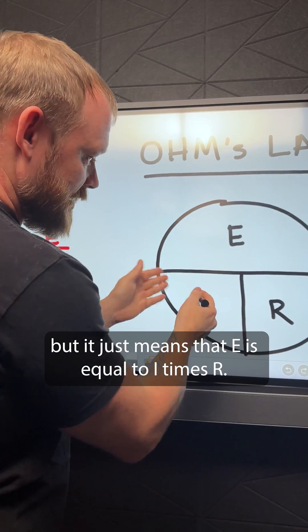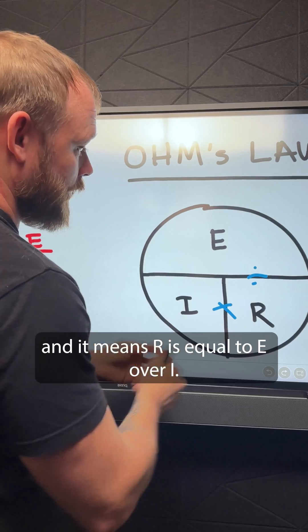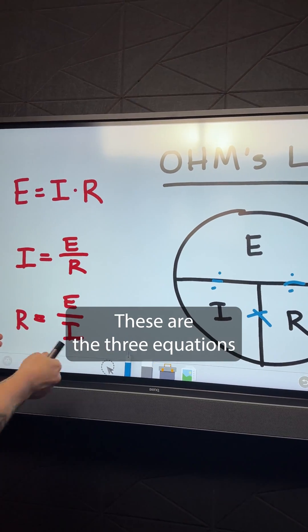but it just means that E is equal to I times R. It means I is equal to E over R, and it means R is equal to E over I. These are the three equations if you want to look them up.